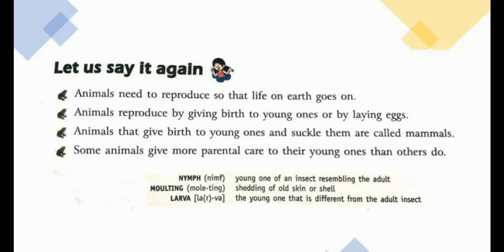To summarize: animals need to reproduce so that life on Earth may go on. Animals reproduce by giving birth to young ones or by laying eggs. Animals that give birth to young ones and suckle them are called mammals, and some give more parental care than others. Three key terms from this chapter: nymph — the young one of an insect resembling the adult; molting — the process of shedding old skin or shell; larva — the young one that is different from the adult.